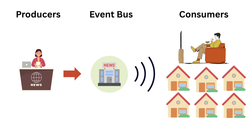Let's use an analogy to make this clearer. Think of a news broadcast. The news reporters, who are the producers, publish news events to the airwaves. Viewers, or consumers, tune into the channels they're interested in and react to the news events relevant to them. The news broadcast system is the event bus — it facilitates communication between reporters and viewers. The reporters don't need to know who's watching, and the viewers don't need to know who's reporting. They're completely decoupled.